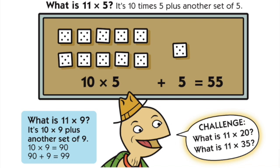What's 11 times 5? It's 10 times 5 plus another set of 5. So we can think of our decade fact first. 10 times 5 is 50, and then add one more set. Add 5 and that gets us 55.